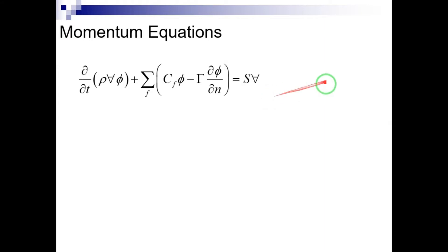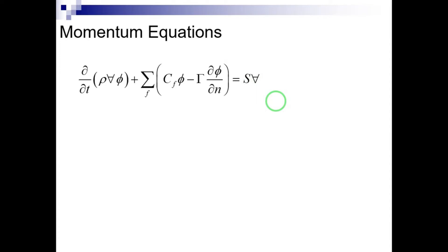Surface and volumetric forces are expressed in the source term, shown on the right-hand side of the transport equation for the variable phi. If velocity is to be substituted with phi, there are a few things to keep in mind. First, the flux expression convection term has nonlinear quantities, which are the multiplication of the velocity components.